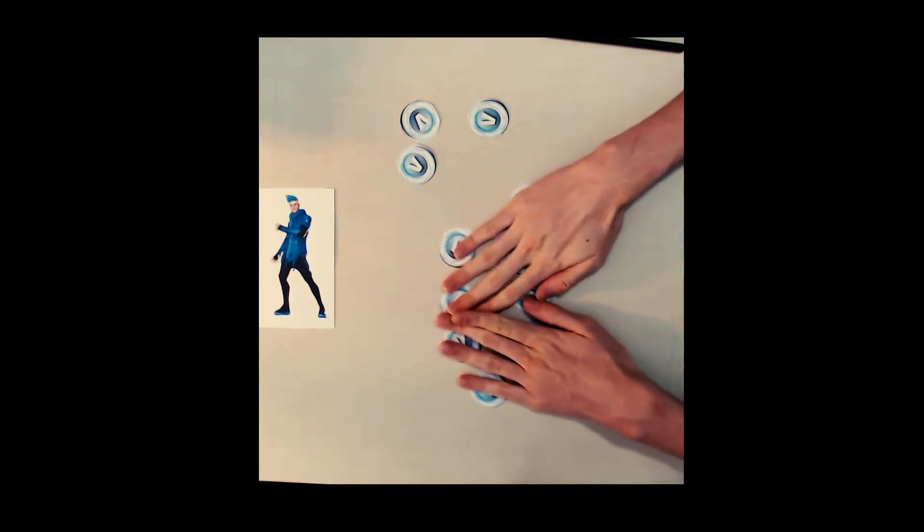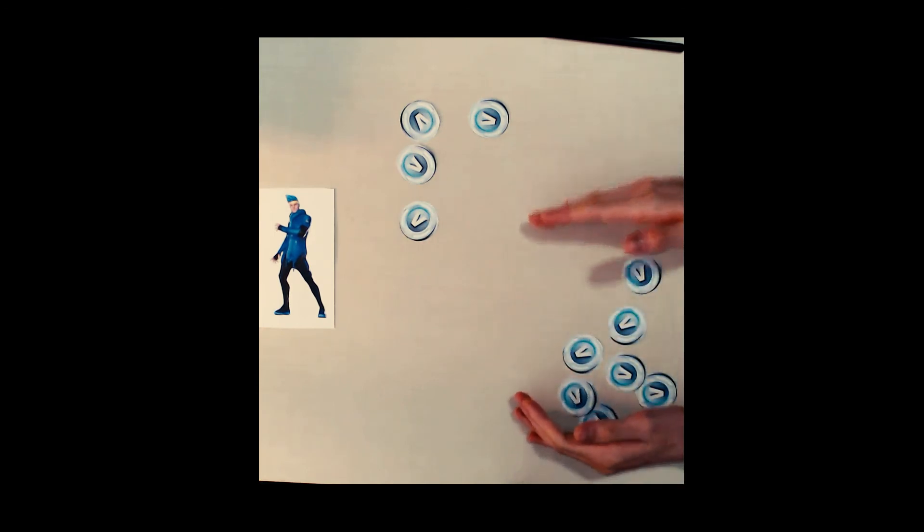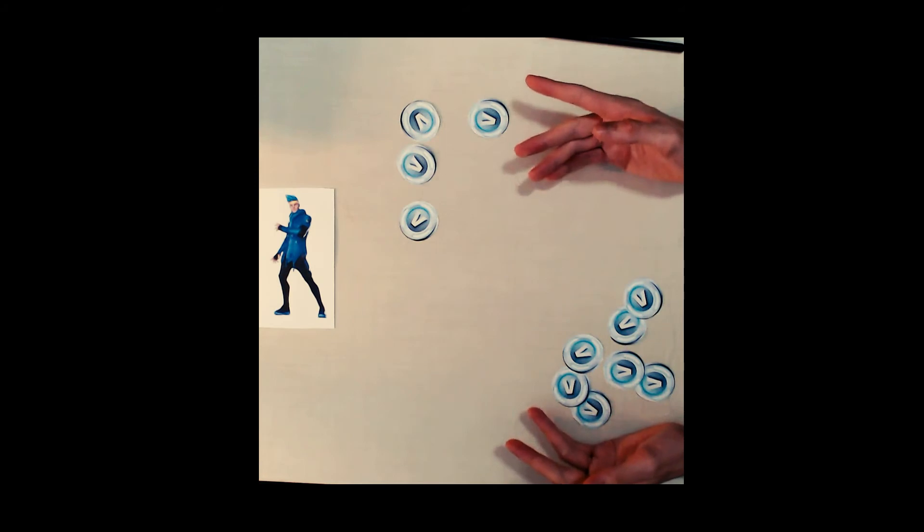Now that we know what our last steps should be, we need to get to them somehow. Well I noticed that no matter what, we can always make sure that four coins will be taken out of the game every two rounds.